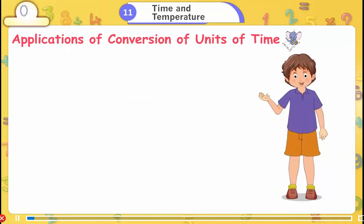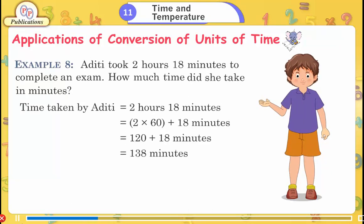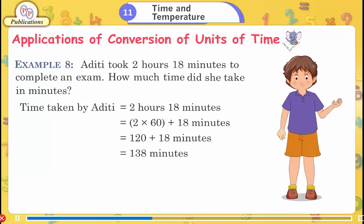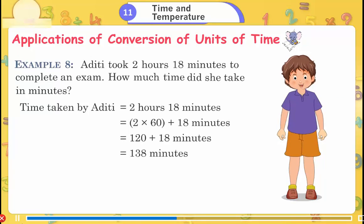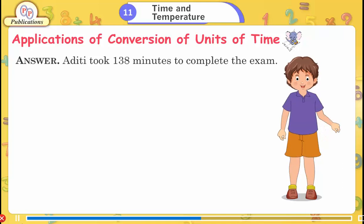Applications of Conversion of Units of Time. Example 8: Aditi took 2 hours 18 minutes to complete an exam. How much time did she take in minutes? Time = 2 hours 18 minutes = (2 × 60) + 18 = 120 + 18 = 138 minutes. Answer: Aditi took 138 minutes to complete the exam.